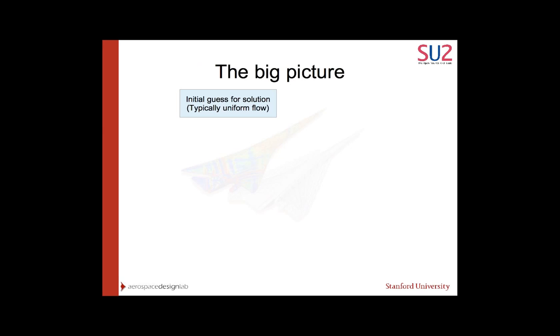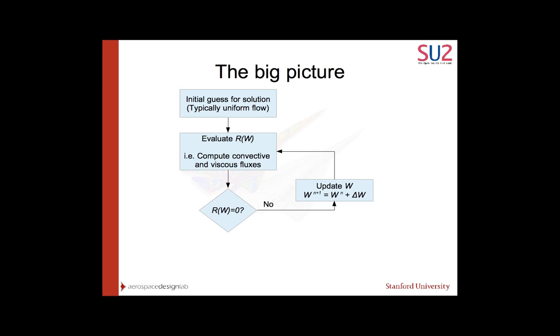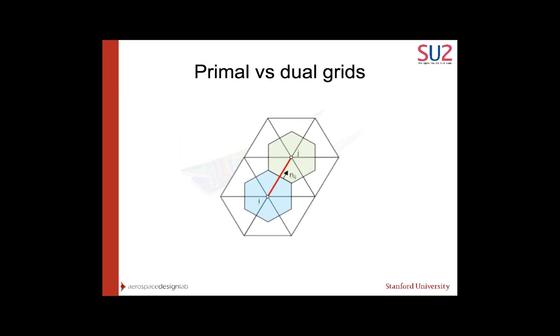So here's that same idea graphically. We'll start with an initial guess for what our flow solution should be, typically uniform flow. We'll evaluate r of w, which means we compute all of the convective and viscous fluxes. Does r of w equal zero? Usually no. When it doesn't, we'll update w. We'll have w at our next time level, n plus 1, equal to w at the previous time level plus this delta w. When r of w does equal zero, we stop.